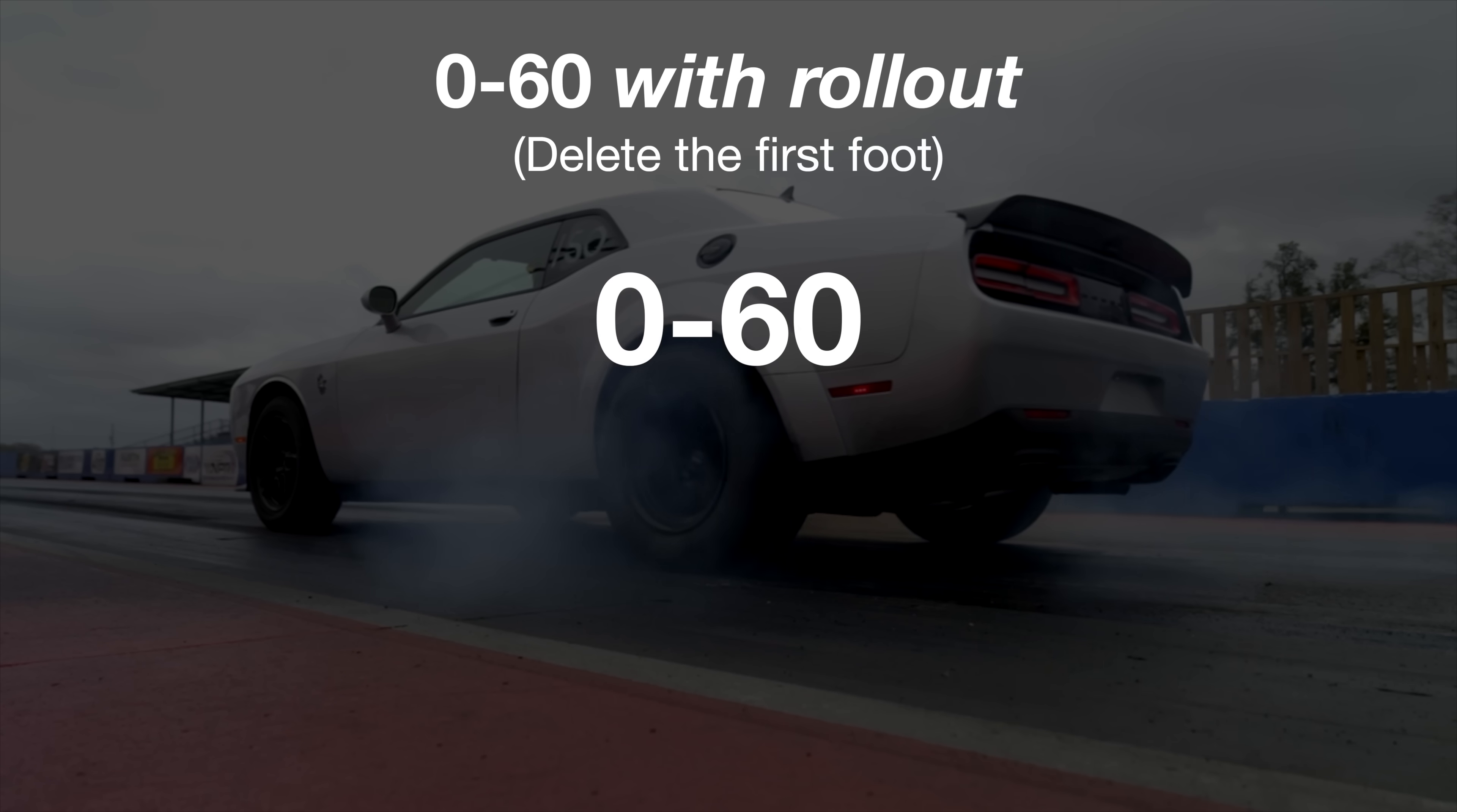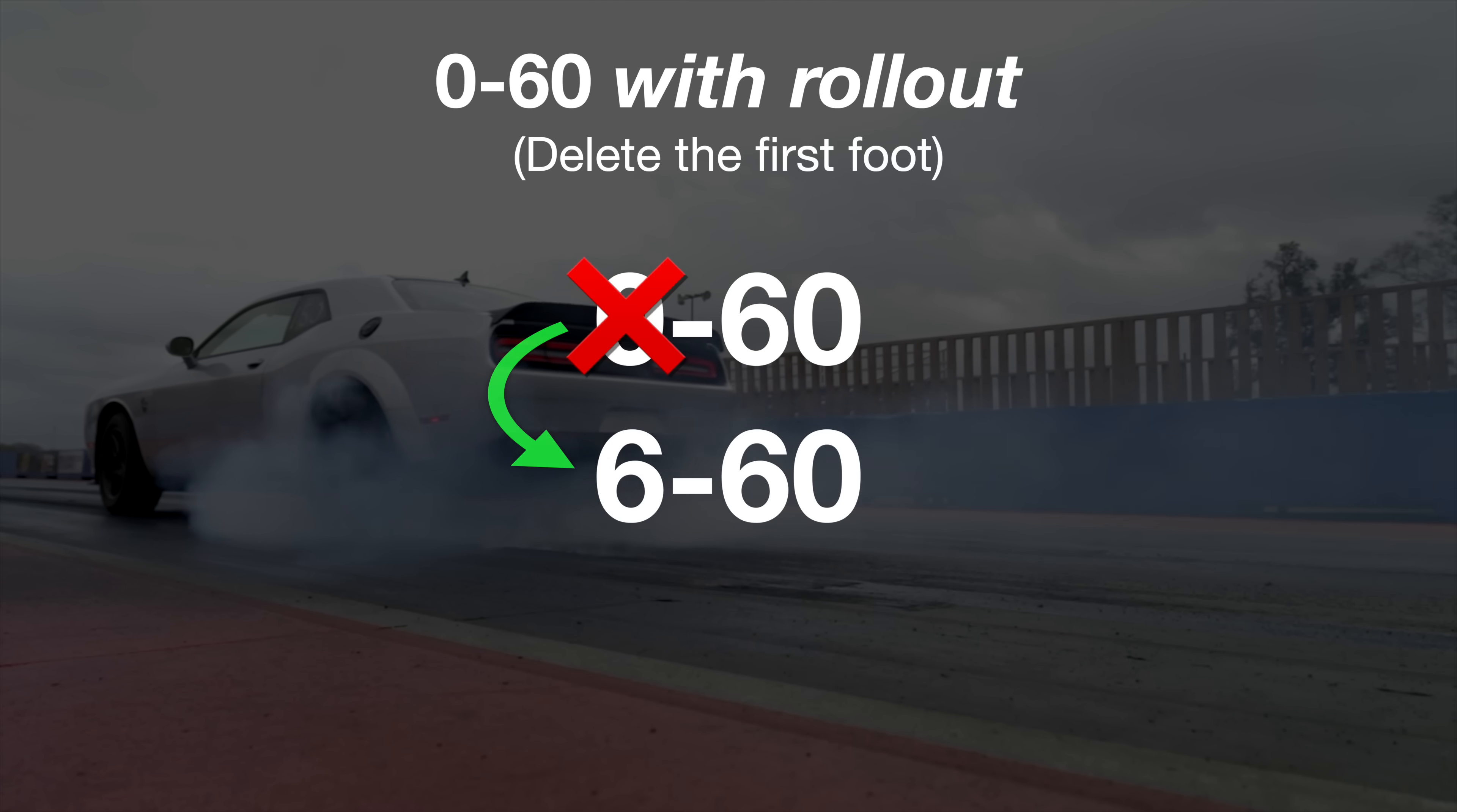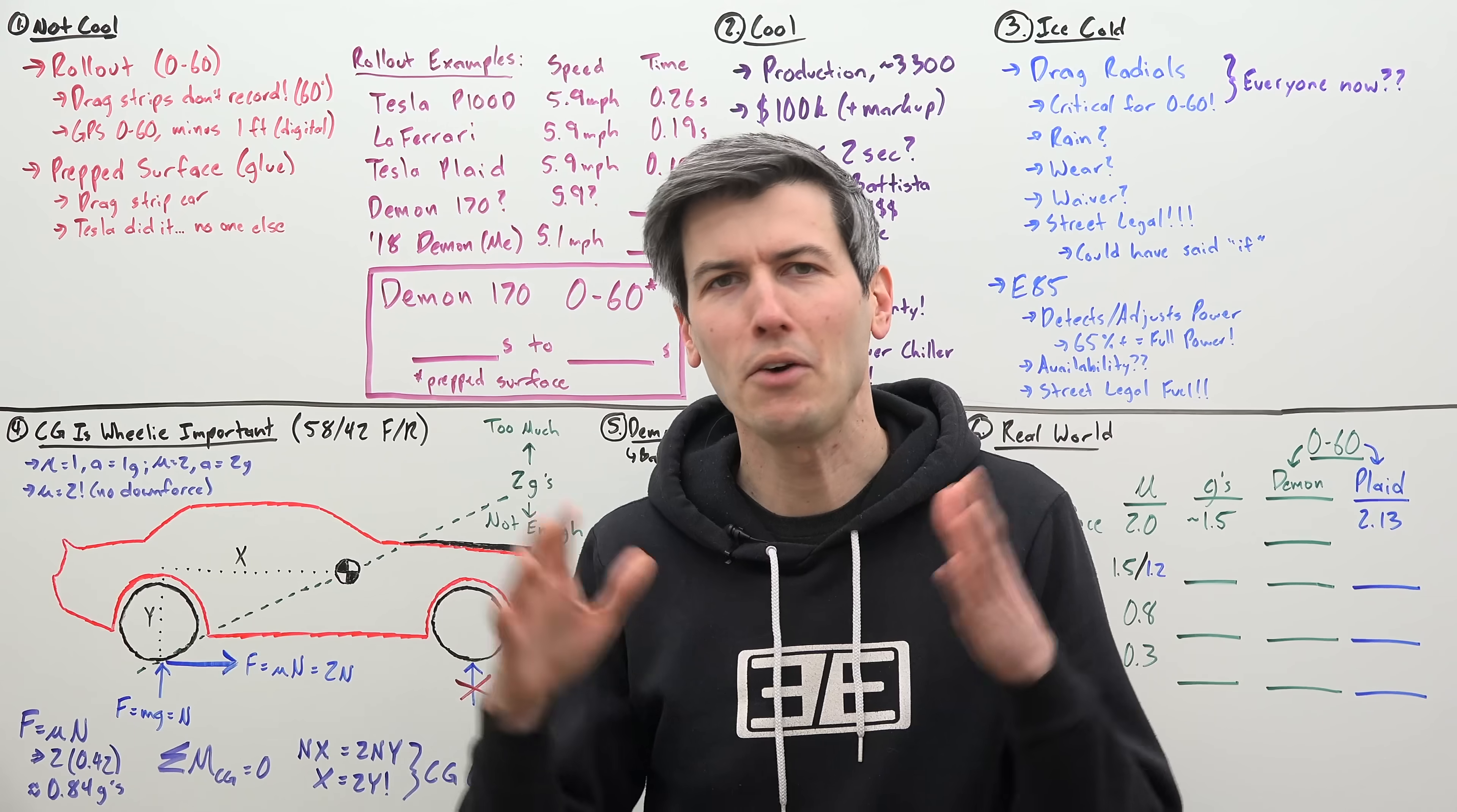Essentially, it's starting the 0 to 60 clock after the car has reached about six miles per hour. You would probably call that a 6 to 60, rightly so, but within the industry, we'd call that a 0 to 60 with rollout. And honestly, most of the time we forget to say that last bit.